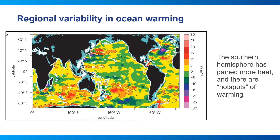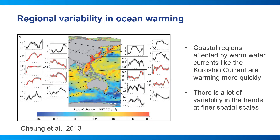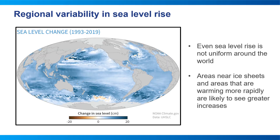We see the same regional variation in ocean warming, with the southern hemisphere gaining more heat and hot spots of warming. The red blobs shown have high heat flux density, calculated in watts per square meter — a common way to measure thermal changes. Coastal regions are affected by warm water currents and are warming more quickly, but ocean warming isn't one size fits all; there's a lot of variability at finer spatial scales. Similarly, sea level rise is not uniform around the world — areas near ice sheets that are warming more rapidly are likely to see greater increases.